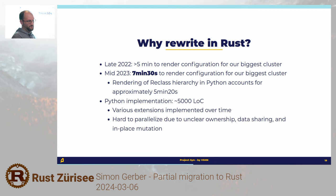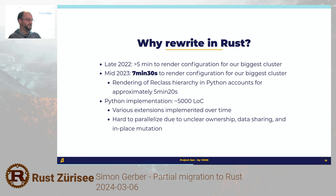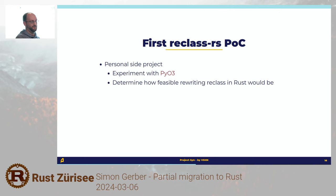We looked at the Python implementation — we'd already fixed a few bugs in there. It's about 5,000 lines of code with a bunch of extensions added over time. I had the wild idea: can I parallelize this? Well, probably, but Python has unclear ownership, data sharing everywhere, in-place mutation everywhere, and even the config structures are shared all across the place. So late 2022, I was bored on a weekend, started a side project, read about PyO3 — a super cool library to write Python libraries in Rust — and thought, maybe I'll just figure out how complicated it would actually be to rewrite reclass in Rust.